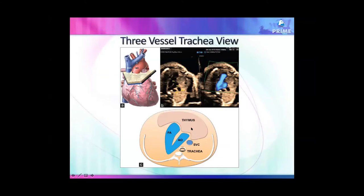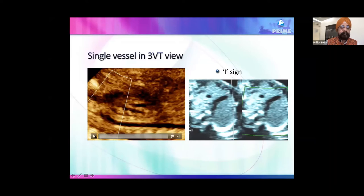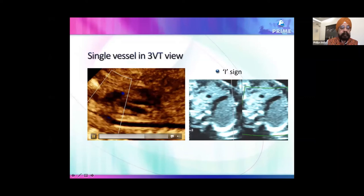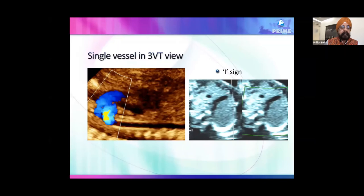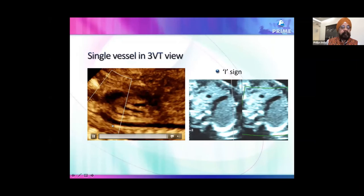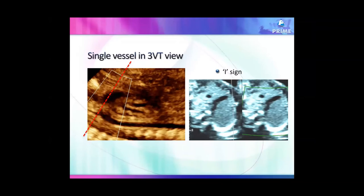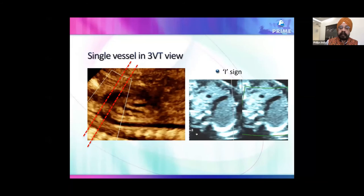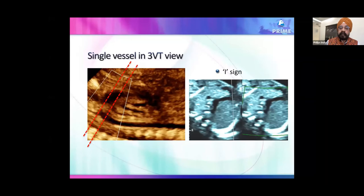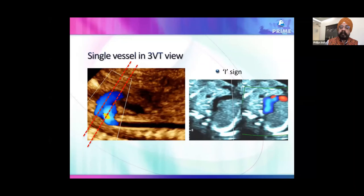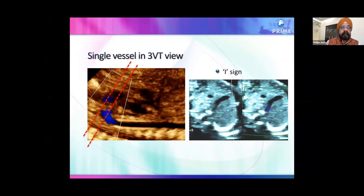In TGA, two vessels go in parallel — one anterior, one posterior — each bending downward. In the three-vessel view, instead of seeing two vessels, you see only a single vessel alongside the SVC. So if you see a single large vessel apart from the SVC — two vessels total, one SVC and one single vessel — TGA is suspected.